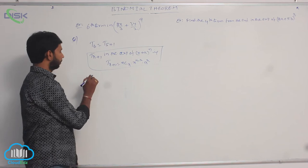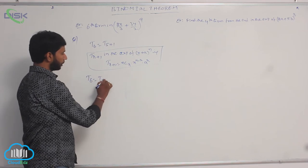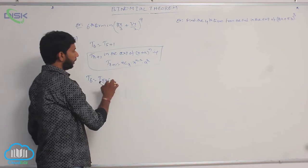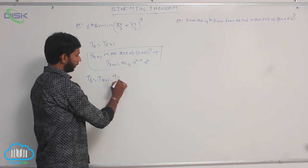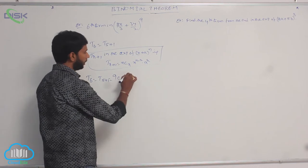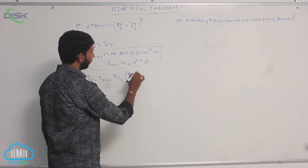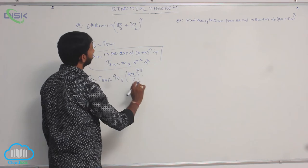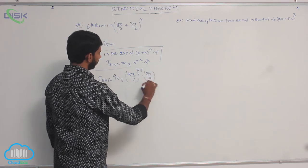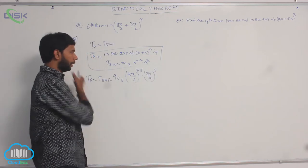Applying the formula: T6 = T(5+1). Here, n = 9 and r = 5. So we get 9C5 · (2x/3)^(9−5) · (3y/2)^5, that is 9C5 · (2x/3)^4 · (3y/2)^5.